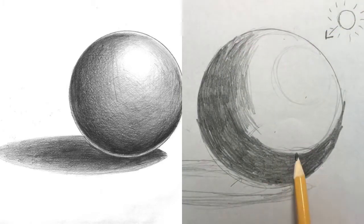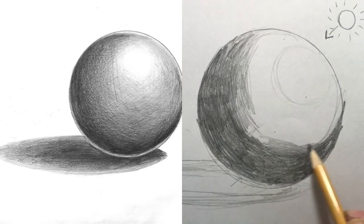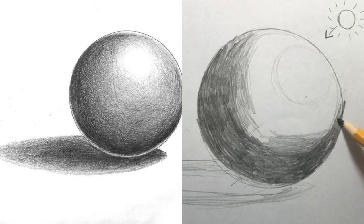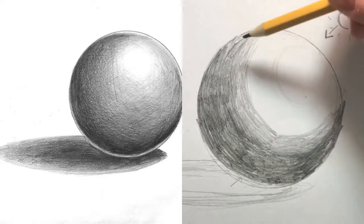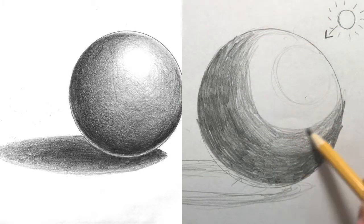Put your pencil in the darker value and shade out from there, pressing lighter as you go up to achieve a more medium value. Continue to shade with hatching following the round shape of the sphere.